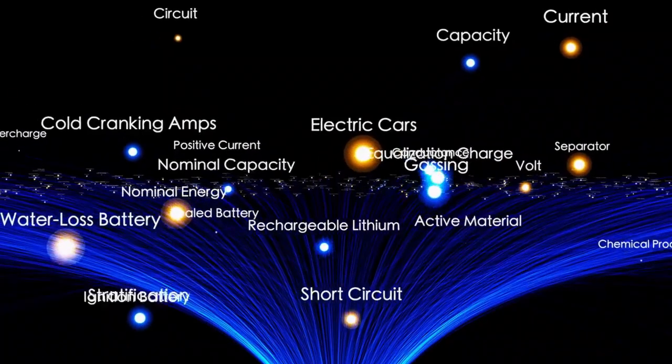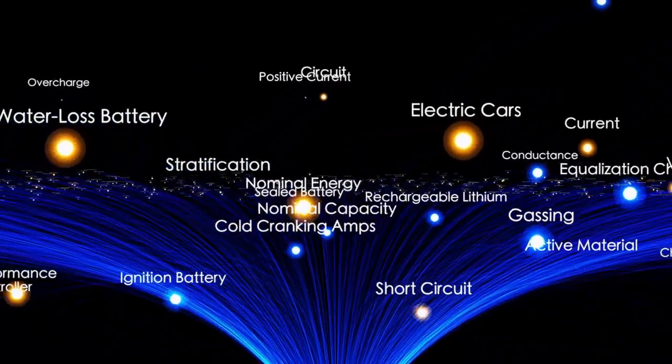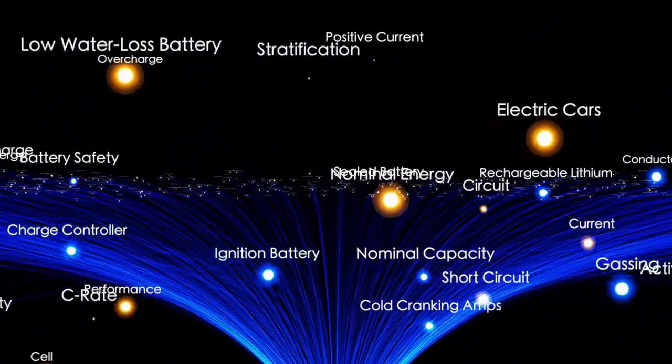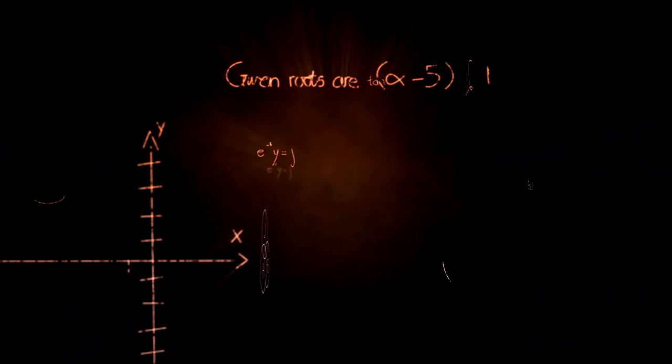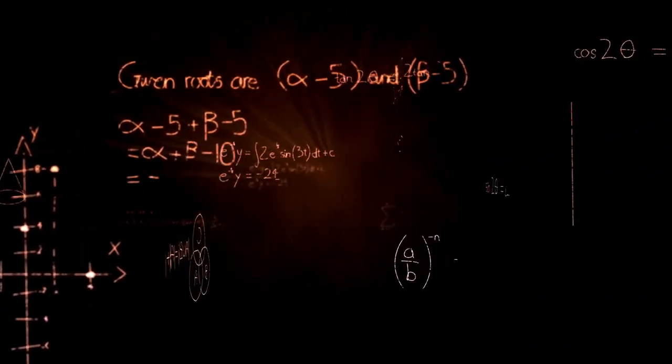If dark flow does exist, it could point to something very large and unknown lying beyond the observable universe, something that is pulling on galaxies and affecting their movement.